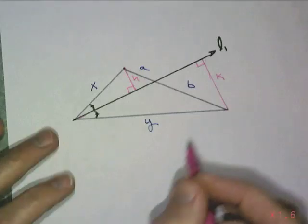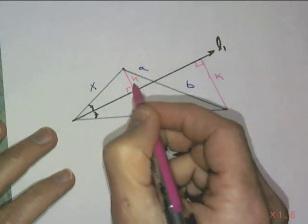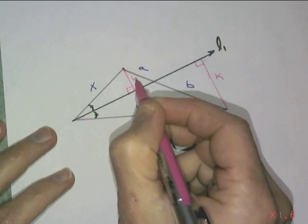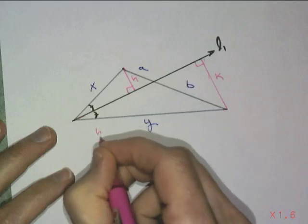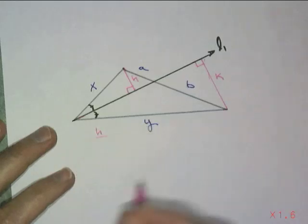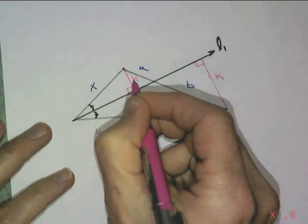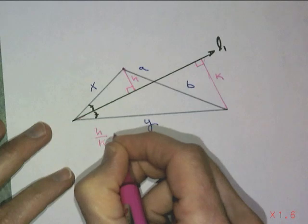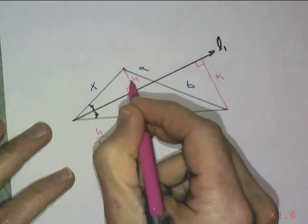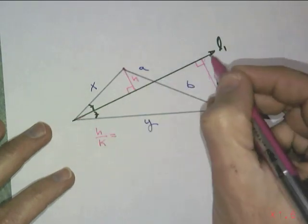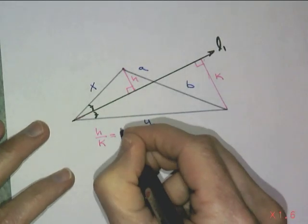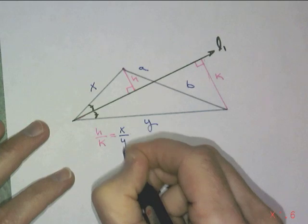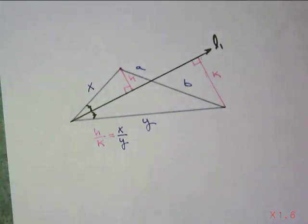Making a comparison: the altitude h compared to x, or let's do h to k. That altitude h to k — the right side to that side — would be the same ratio as x to y.